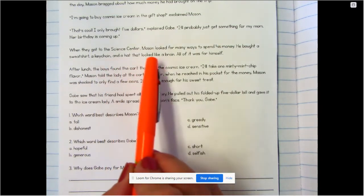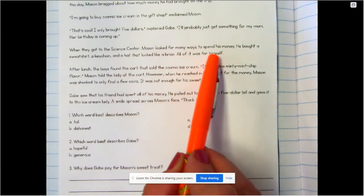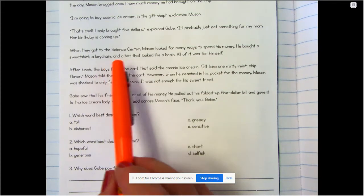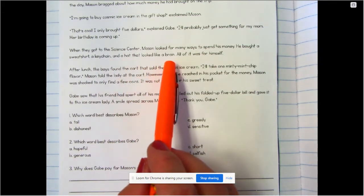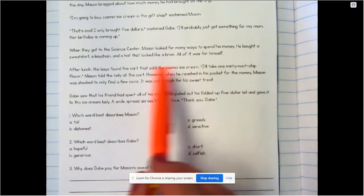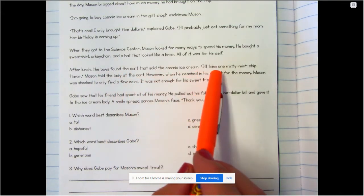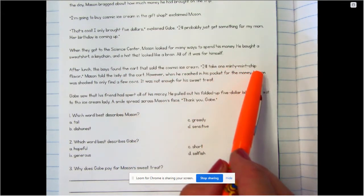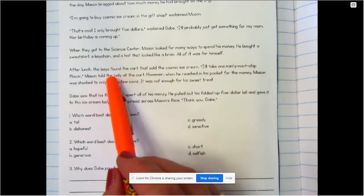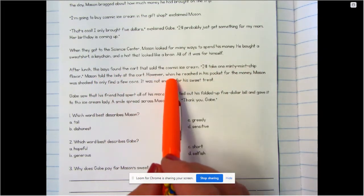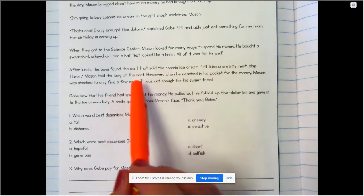When they got to the Science Center, Mason looked for many ways to spend his money. He bought a sweatshirt, a keychain, and a hat that looked like a brain. All of it was for himself. After lunch, the boys found the cart that sold the cosmic ice cream. I'll take one minty mint chip chip flavor, Mason told the lady at the cart.